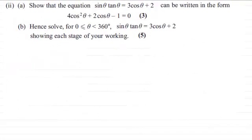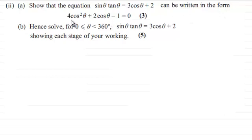This question comes in two parts. We'll tackle the first part first, which is to show that the equation sine theta tan theta equals 3 cos theta plus 2 can be written in the form 4 cos squared theta plus 2 cos theta minus 1 equals 0, for 3 marks.